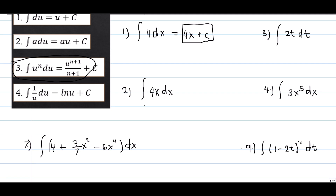Another example, problem number 2: the integral of 4x dx. This equals 4x to the power 1 plus 1 over 1 plus 1, then plus c. Since 1 plus 1 equals 2, and 4 over 2 equals 2, therefore the answer is 2x squared plus c. That is the final answer.